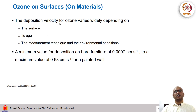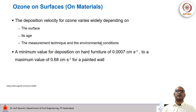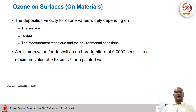The deposition velocity of ozone on surfaces varies widely depending on the surface, its age, the measurement technique, and environmental conditions. On hard furniture, it can be as low as 0.07 × 10⁻⁴ centimeters per second, which is a very low velocity. The highest deposition velocity was found on a painted wall at 0.68 centimeters per second, which is a very reasonable magnitude.